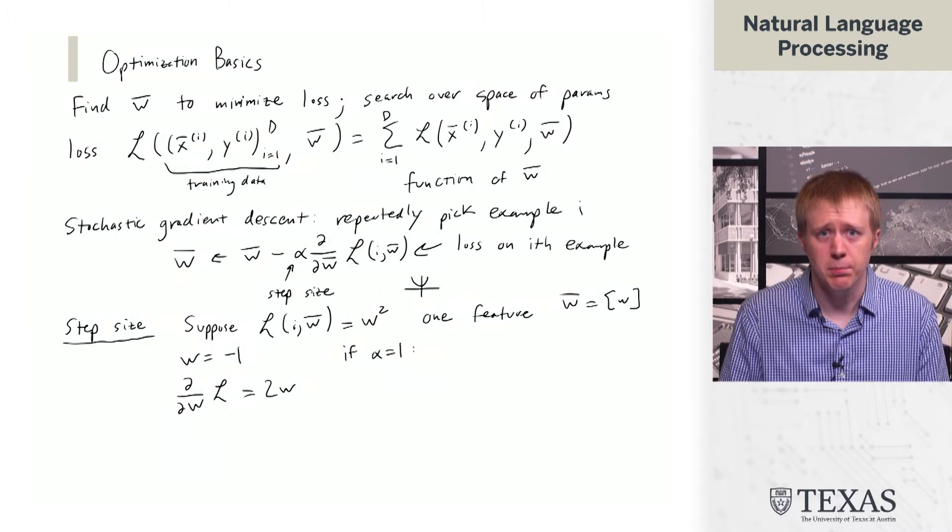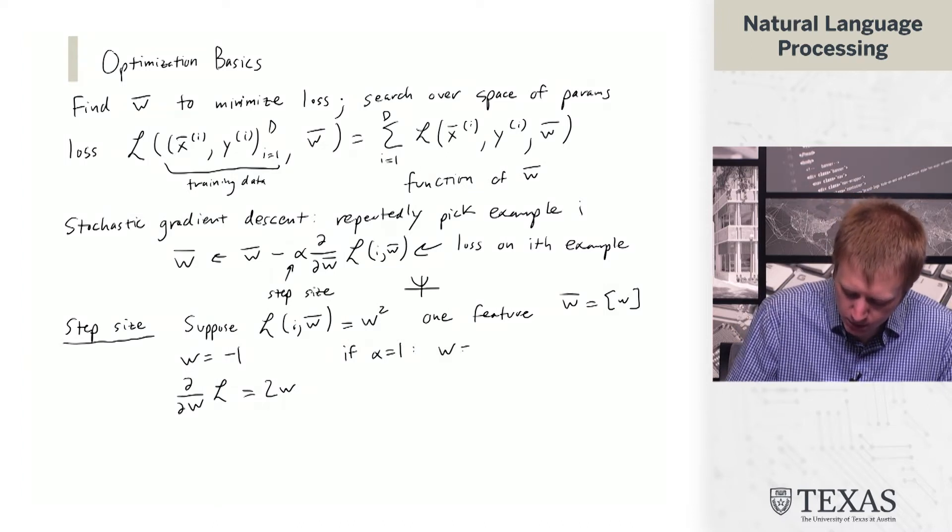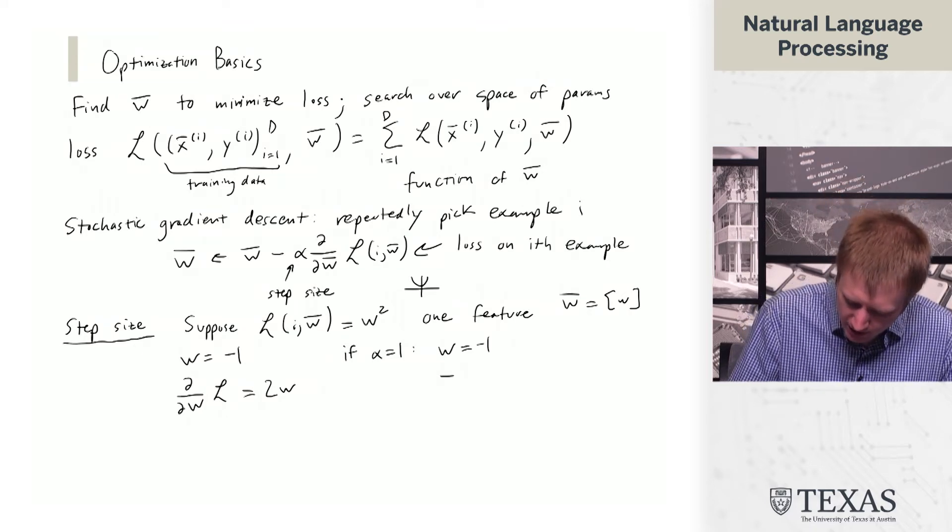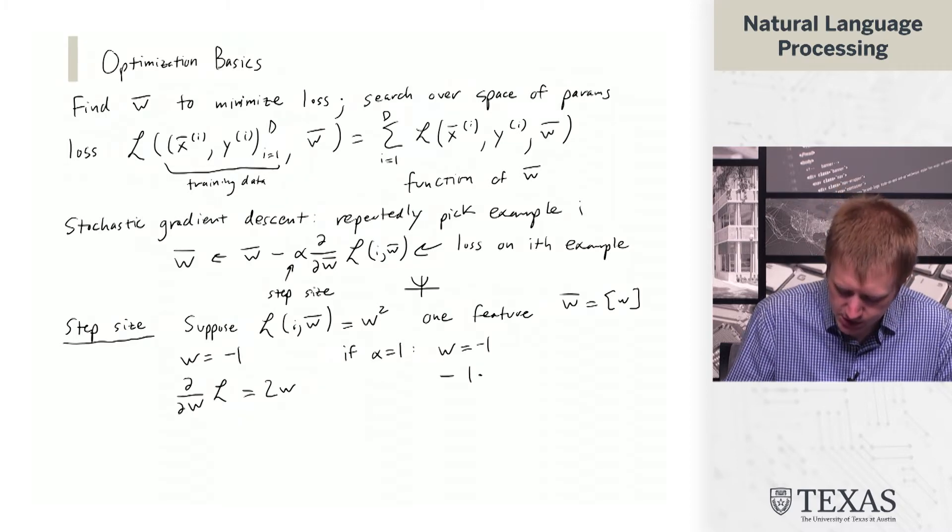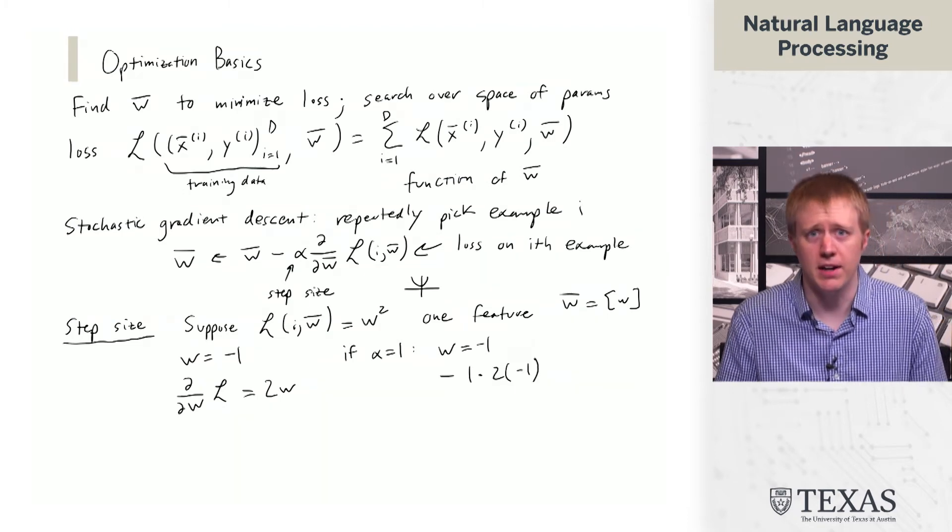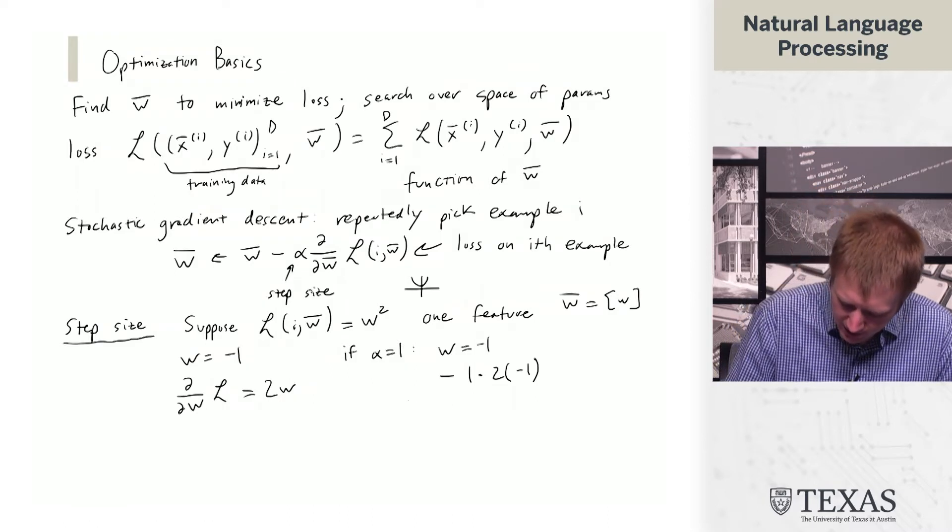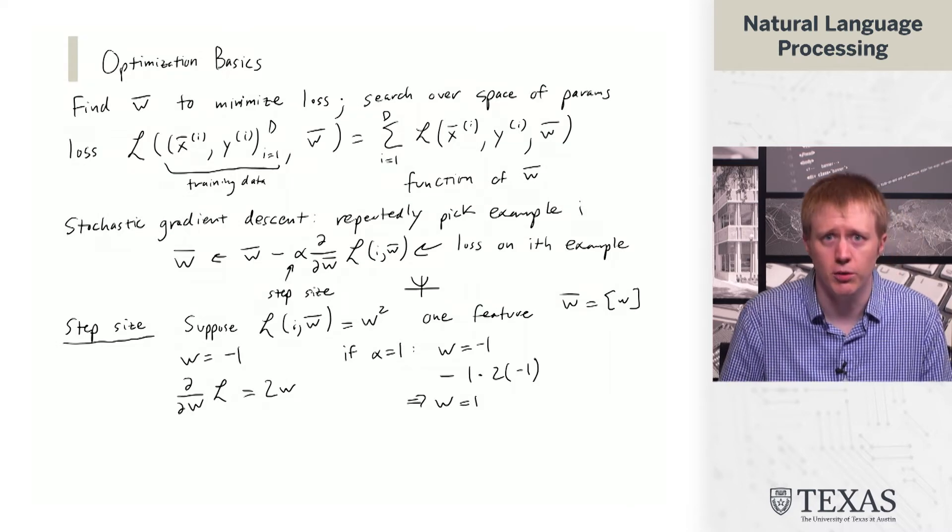What happens with SGD if alpha equals one? We have our current weight W, which we set as minus one, and then we subtract off alpha, which is one, times the gradient, which is two W, which is two times minus one. That gives us an updated value of W equal to one now.